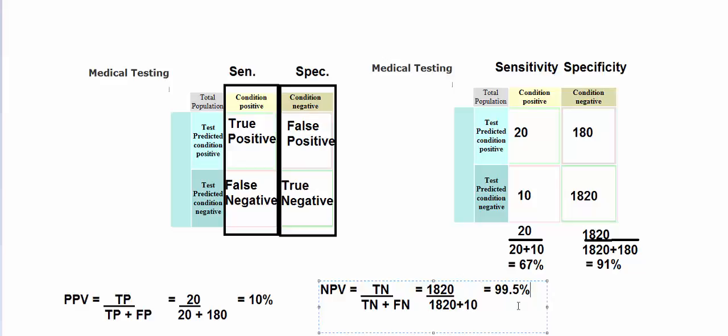So I would say you could breathe a nice sigh of relief when you get a negative test. And if it comes back positive, take a deep breath — still more testing to be done, still more investigation needed. So that would be PPV, positive predictive value, and NPV, negative predictive value.